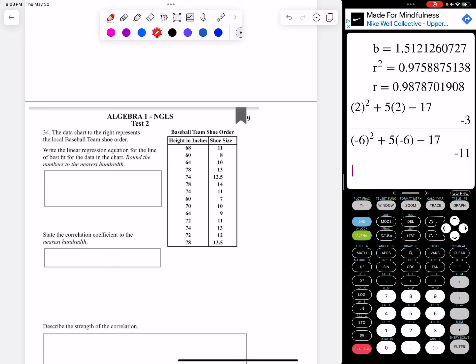Question 34. The data chart to the right represents the local baseball team's shoe order. Write the linear regression equation for the line of best fit for the data in the chart. Round the numbers to the nearest hundredth. So the first thing we're going to do is write down point number number. That way we remember to round to the nearest hundredth is two decimal places out.